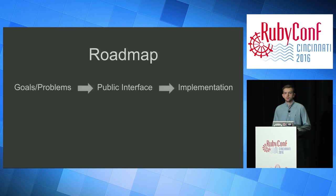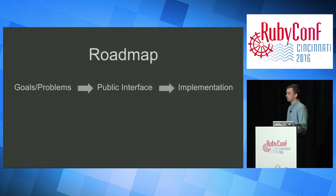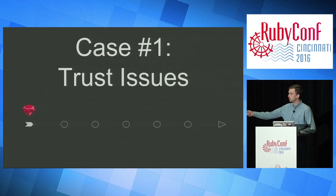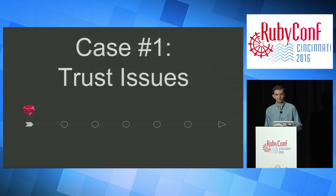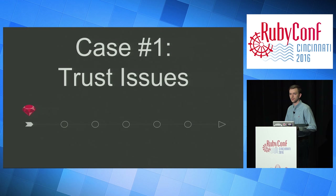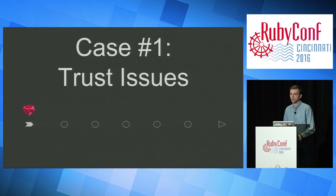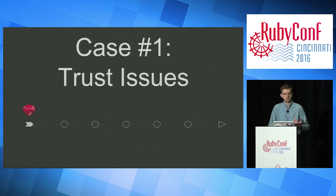The roadmap: we're going to talk about some goals we'd like, then the problems associated with reaching those goals, then look at the public interface that satisfies that, and then dive deep into the implementation. Code heavy — beware. The first case we're going to talk about is trust issues. Developers tend to code defensively, wanting to prevent others from making mistakes and from ourselves making those same mistakes.